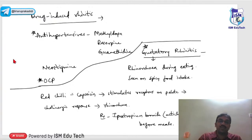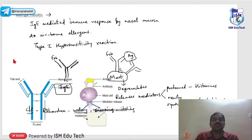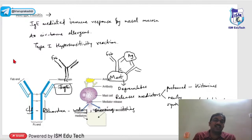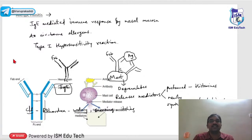Allergic rhinitis is the most commonly diagnosed nasal condition. Patients present with repeated morning sneezing that improves with antihistamines. It is an IgE-mediated immune response — type 1 hypersensitivity — to airborne allergens. Histamine release causes rhinorrhea, watering, sneezing, and itching.